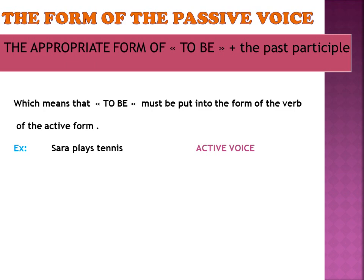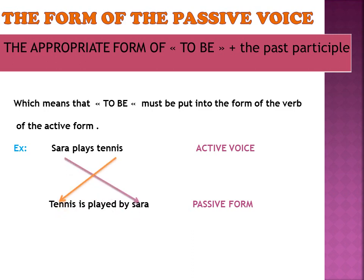In the active voice we have subject, verb, and object — like 'Sarah plays tennis.' In the passive voice, the object of the active voice takes the place of the subject, the subject moves to the place of the object, and 'to be' must be in the appropriate tense form.